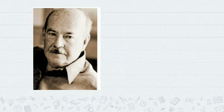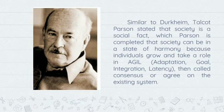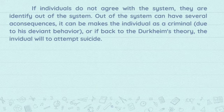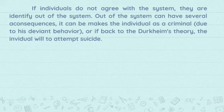Similar to Durkheim, Talcott Parsons stated that society is a social fact. Parsons completed this by saying that society can be in a state of harmony because individuals grow and take a role in AGIL — adaptation, goal, integration, and latency — then call consensus, or agree on the existing system. If individuals do not agree with the system, they are identified as outside of the system, which can have several consequences. It can mark the individual as a criminal due to deviant behavior, or, referring back to Durkheim's theory, the individual may attempt suicide.